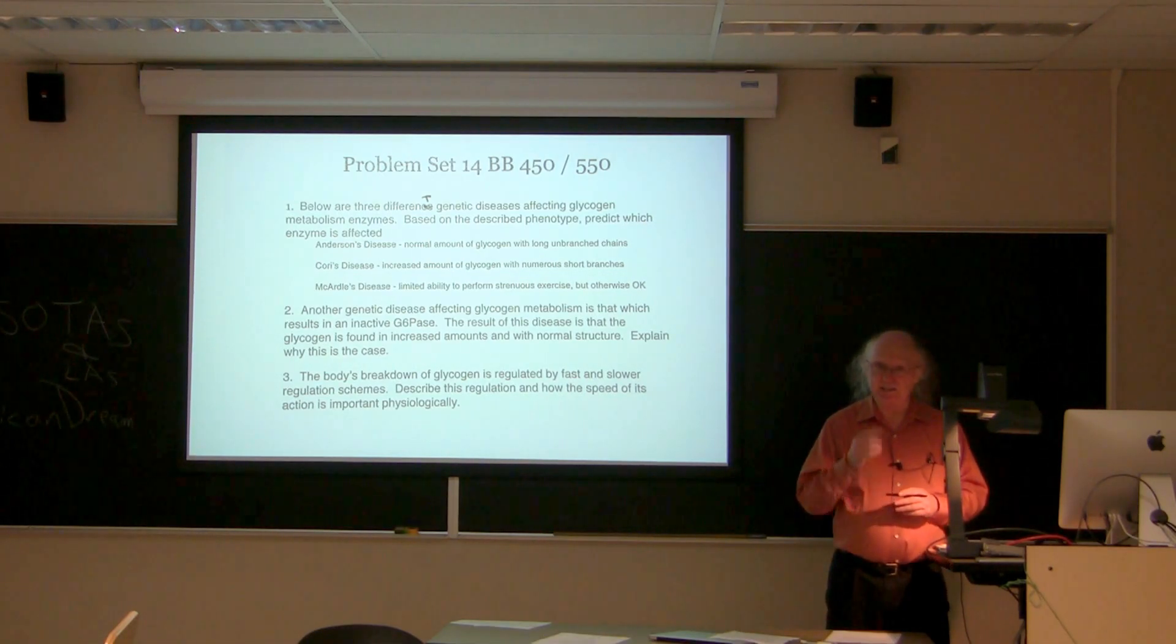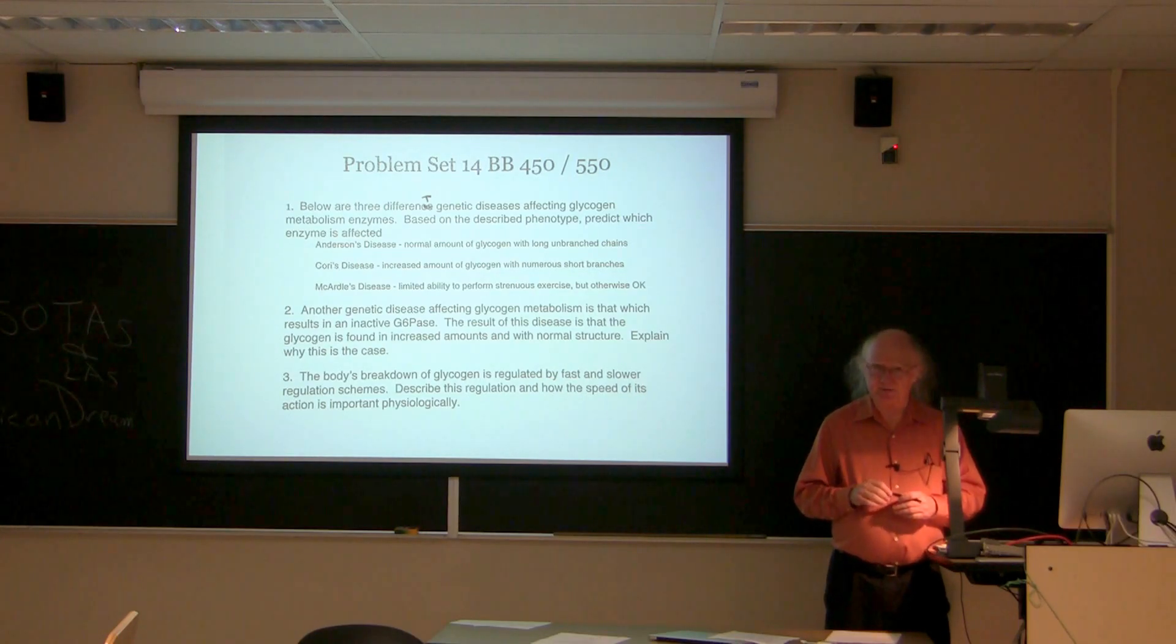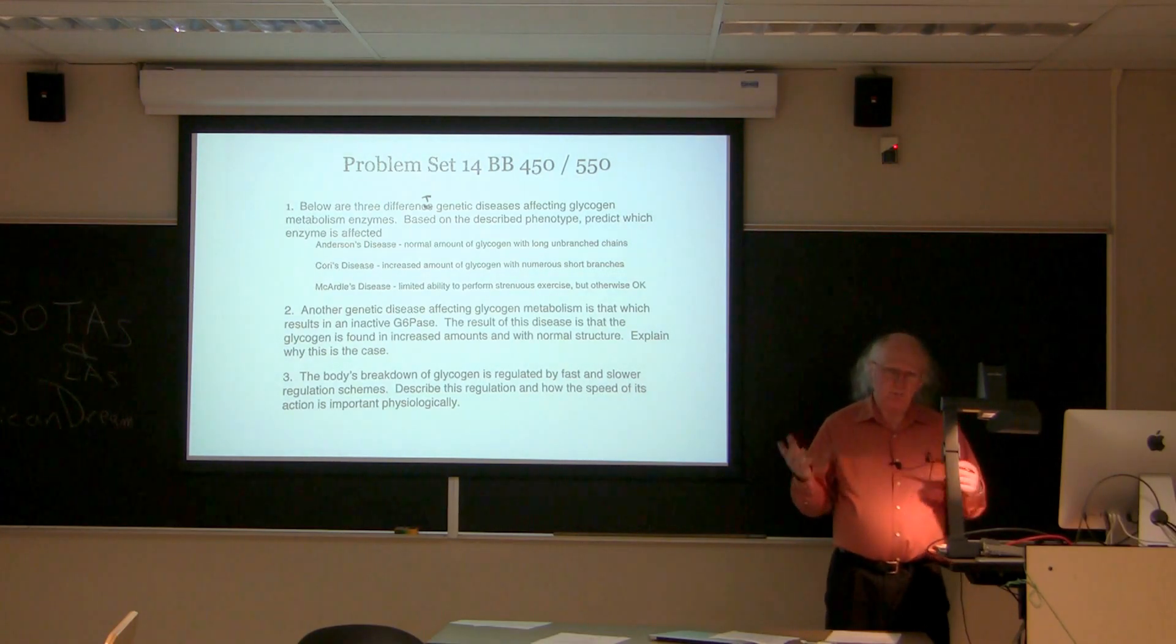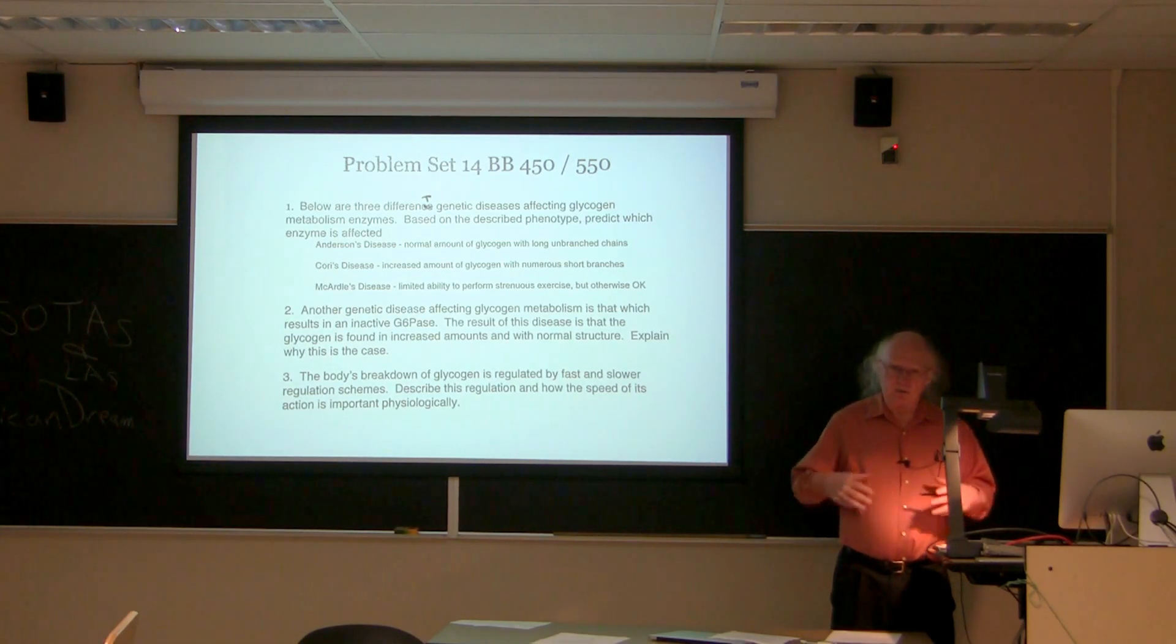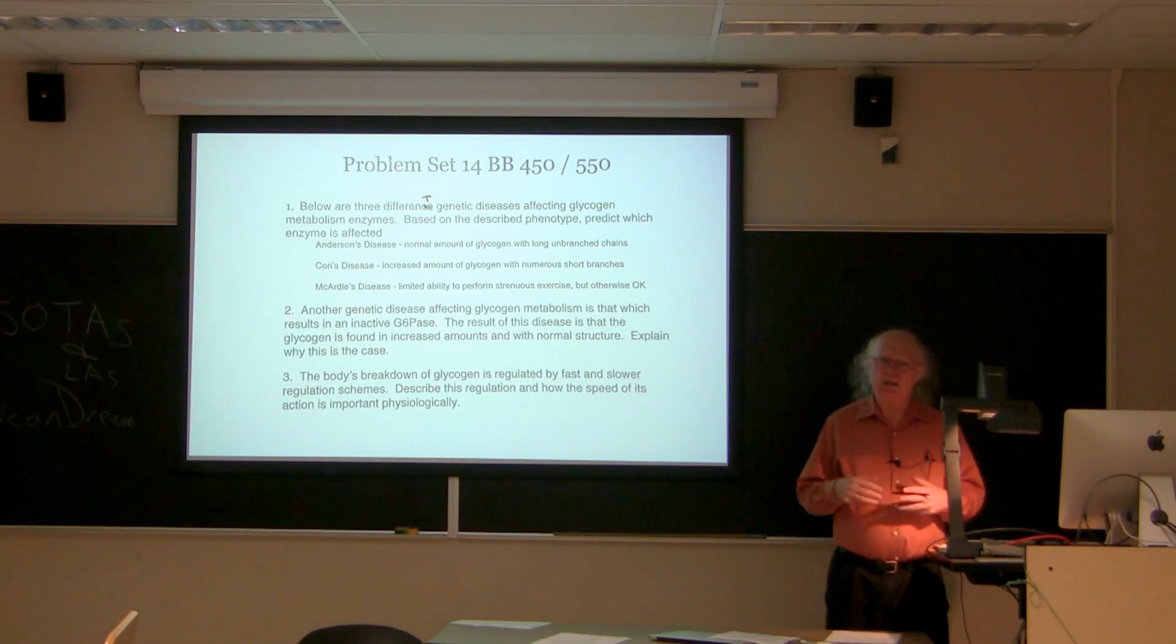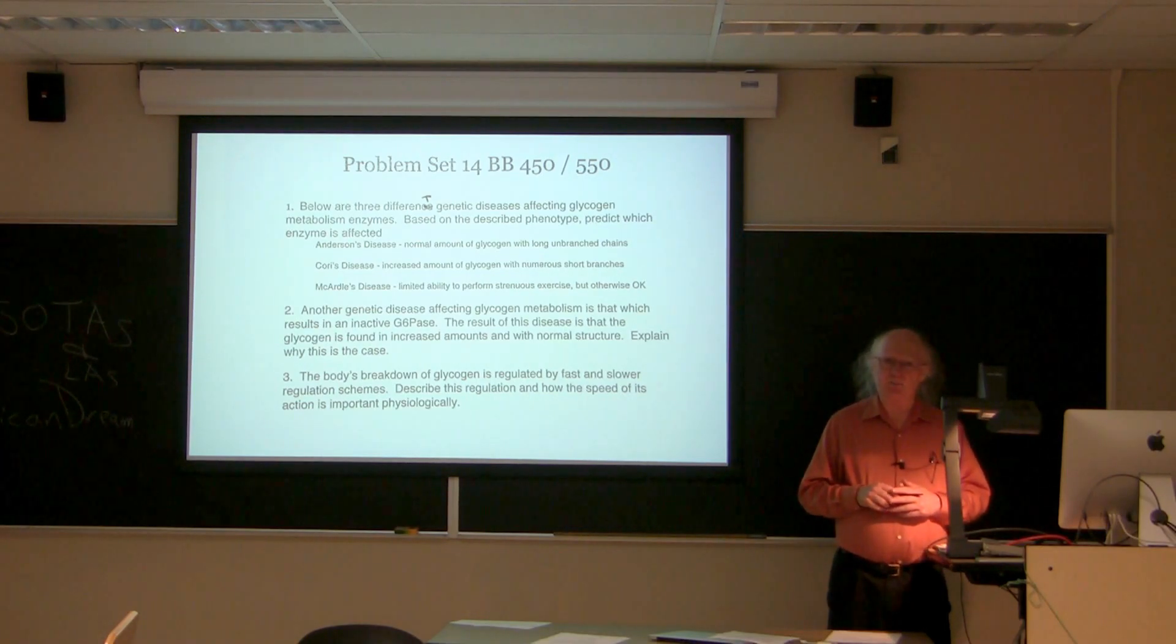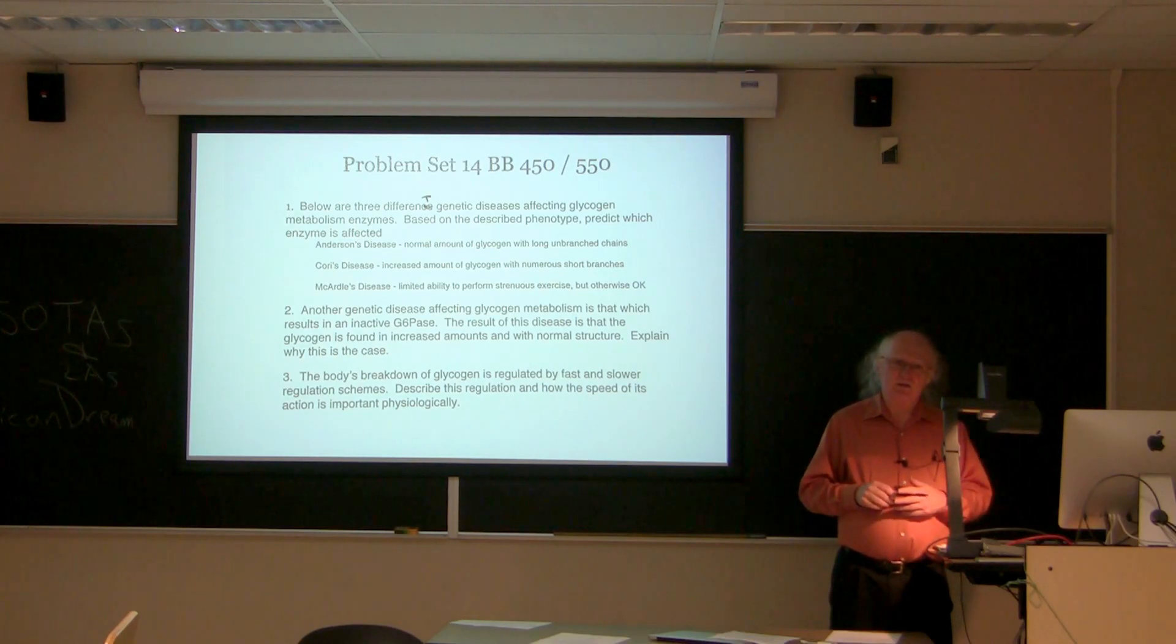It turns out that people who have McArdle's disease are lacking glycogen phosphorylase in their muscles and only in their muscles. If they were completely lacking in glycogen phosphorylase, my suspicion is that they would probably not survive. Their liver in this case has normal glycogen phosphorylase and is able to break down the glycogen that's there and provide it to the muscle cells via the Cori cycle.